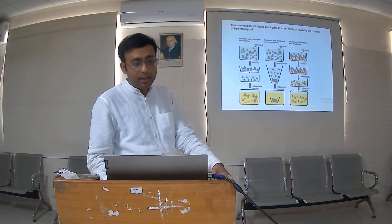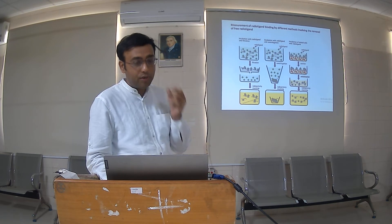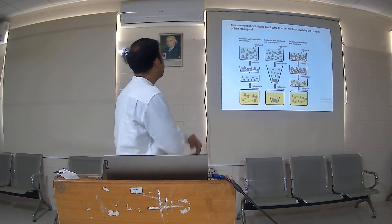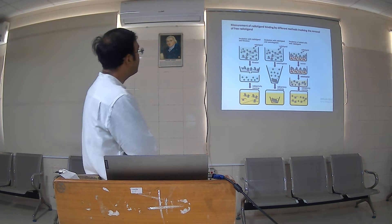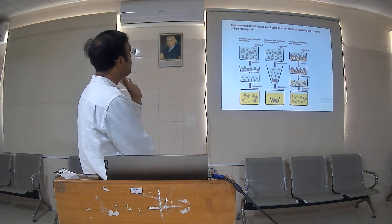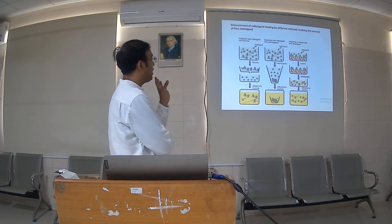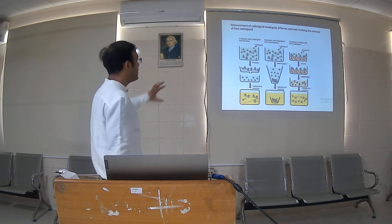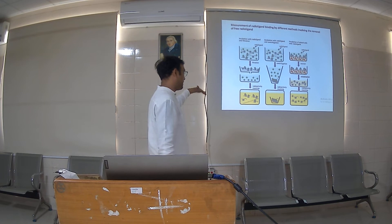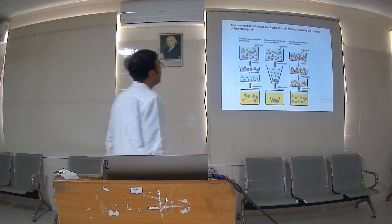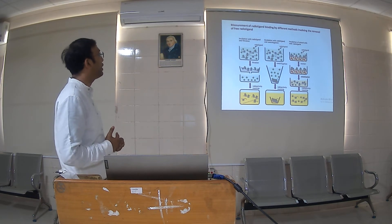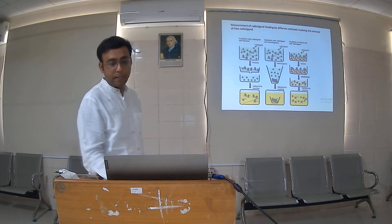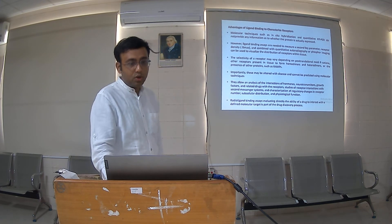With these assays — saturation, competition, and kinetic — we determine different values and this is how we determine the ligand-receptor interaction. These are different modifications of the assay. Measurement of radioligand binding by different methods involves removal of free radioligand. Methods include incubation of radioligand followed by filtration, centrifugation, and incubation of plated cells.